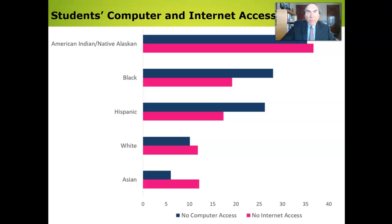According to the most recent data from the National Center for Education Statistics, 20% of children ages 3 through 18 from all races do not have computer access at home, and 14% do not have internet access. This data shows sharp accessibility and equity differences between family demographics.